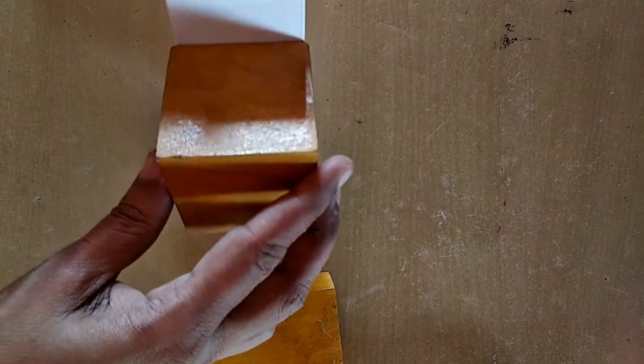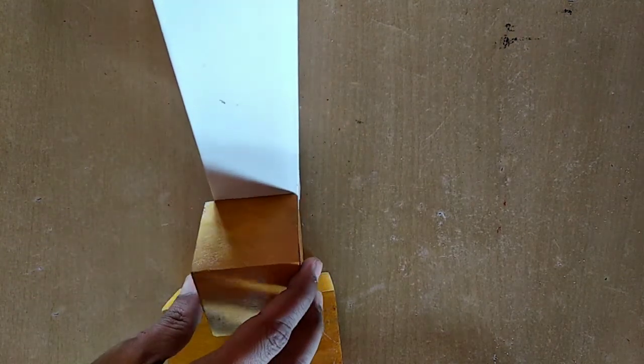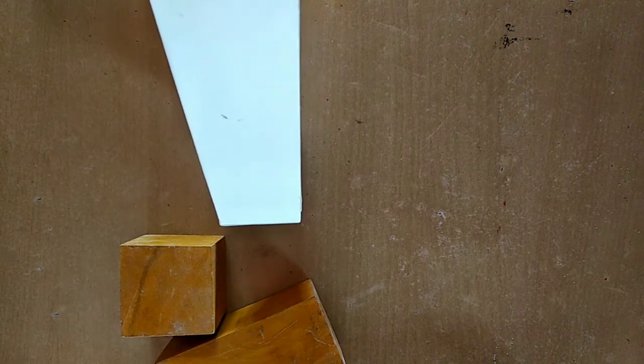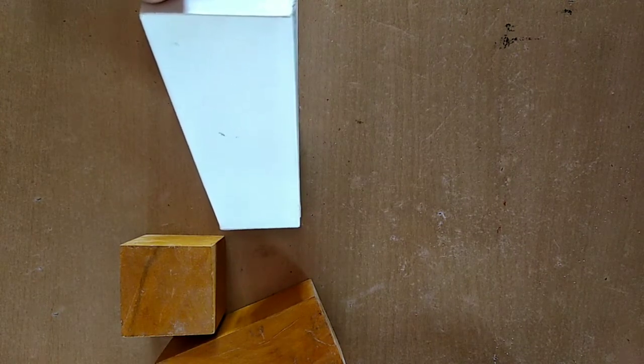Cuboid has a plane surface. Hence, it can only slide. Cube is also having plane surface. Hence, it can only slide.